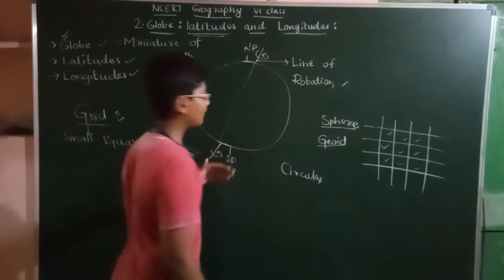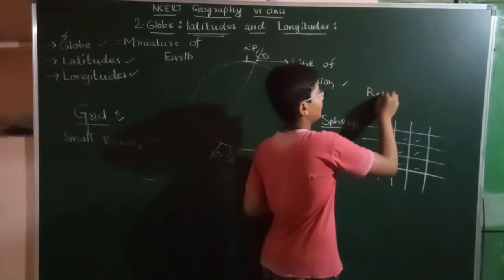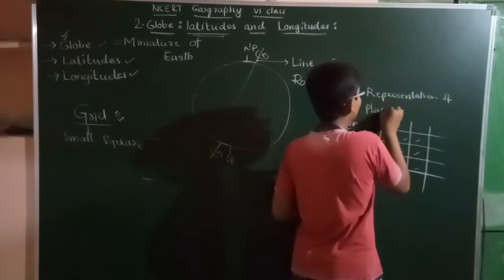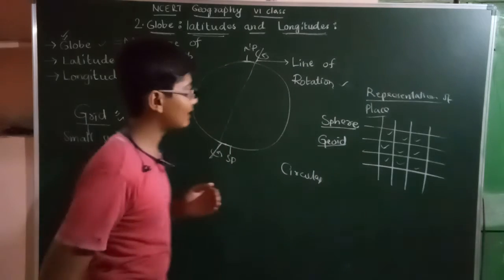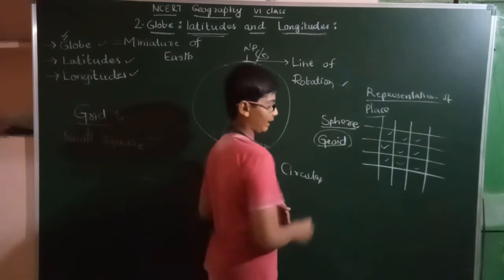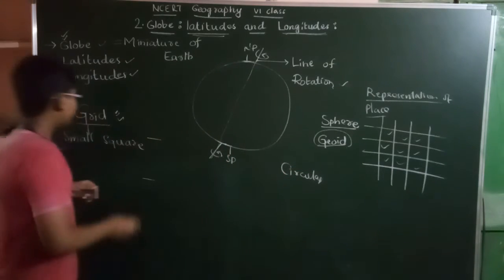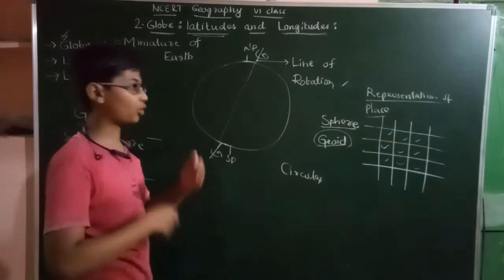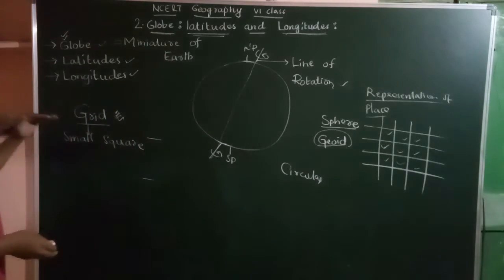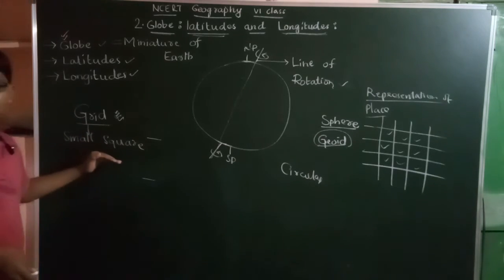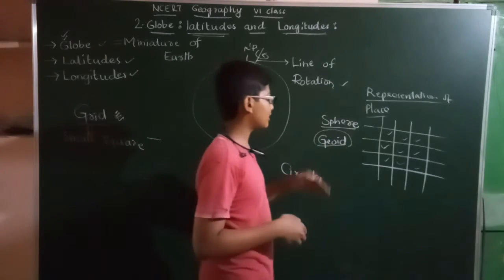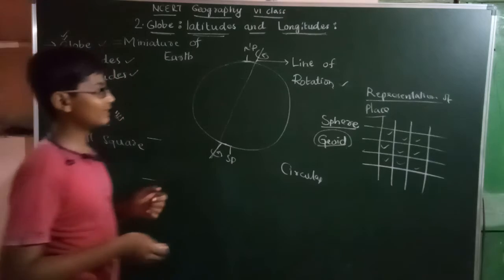Now let's learn how to represent a place. Our Earth is in the shape of a geoid, which makes it very hard to locate a place accurately. So we use a grid. This method has been in use from the time of Ptolemy and many ancient geographers. They had the idea to use a grid for locating places, and this has been in use for many days.